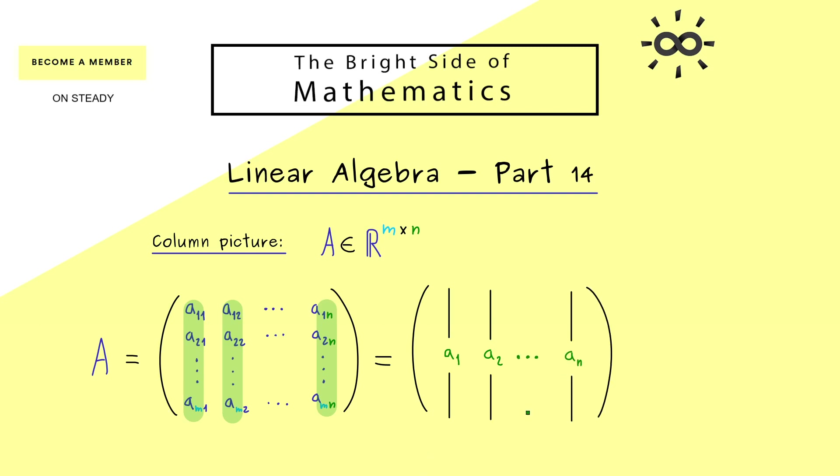So you see, this is not so complicated, each column is just a column vector with m components. Or in other words, the vector Ai is now defined by using the components of the matrix A with 2 indices.